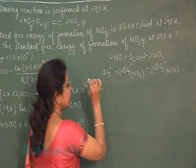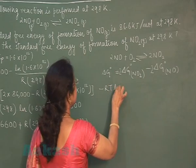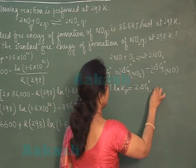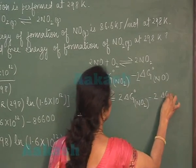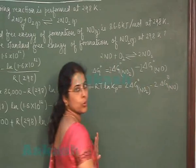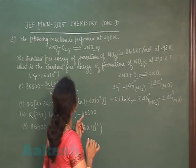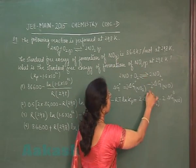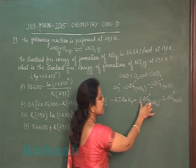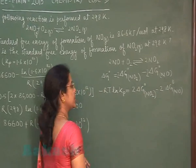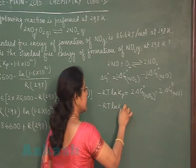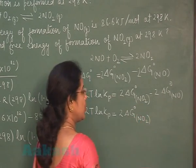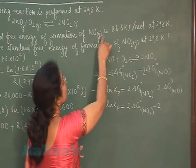Now, delta G0 of the reaction can be written as minus RT ln Kp. This is equal to 2 into delta G0 formation of NO2 minus 2 into delta G0 formation of NO. Now, see in the question. In this question, formation of standard free energy formation of NO is given. And standard free energy of formation of NO2 is to find out.